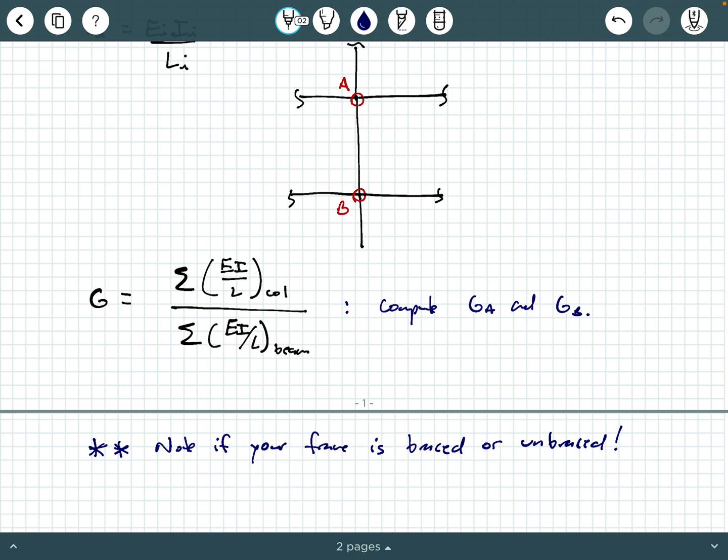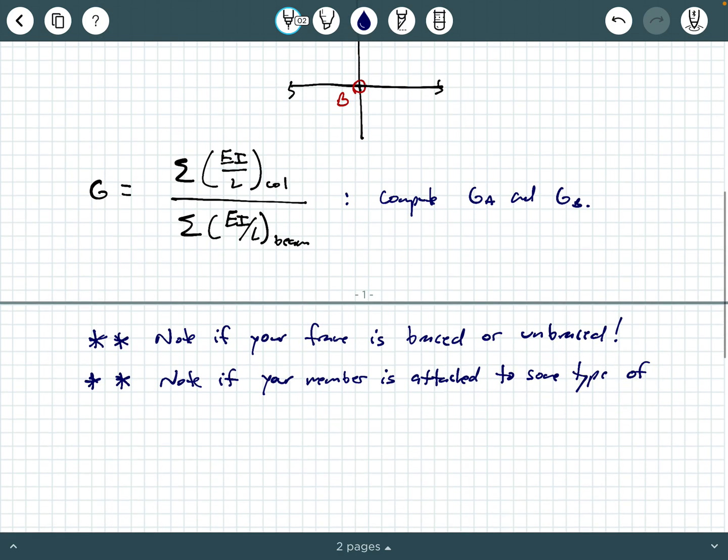Other things to note, you need to note the fine print. In my steel manual, it's page 16.1-573, but there are adjustments for columns with differing end conditions. So note if your member is attached to some type of foundation. So depending on how your member is attached to possibly a foundation, that's going to affect your G value.